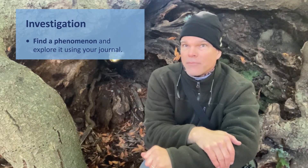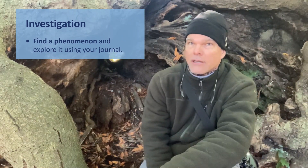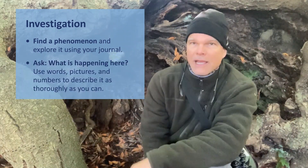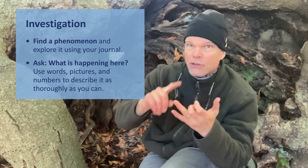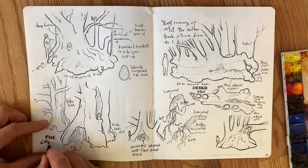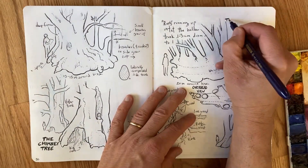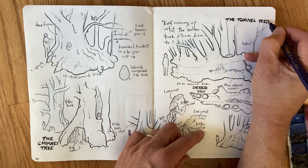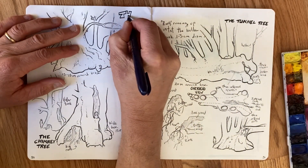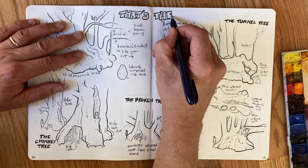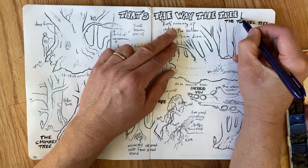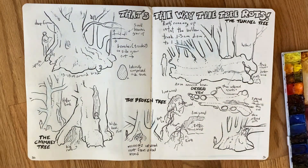Your Nature Journal challenge for this week is to find a phenomenon that you don't fully understand and to begin to explore it in your Nature Journal. Start with 'what' — what is happening here? Use words and pictures and numbers to describe that process, that event, that phenomenon, as thoroughly as you can. As you begin to collect more clues and document them in your journal, you can start to pivot to 'how.' How does this work? Starting with 'what' and then moving into 'how' is a really interesting strategy that you can use on all sorts of phenomena that you see around you.